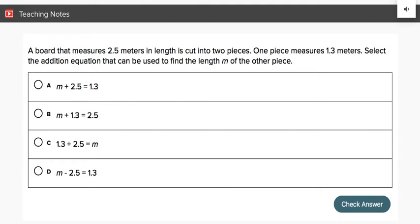Now, we're going to use those key steps in order to answer the given problem. A board that measures 2.5 meters in length is cut into two pieces. One piece measures 1.3 meters. Select the addition equation that can be used to find the length m of the other piece.